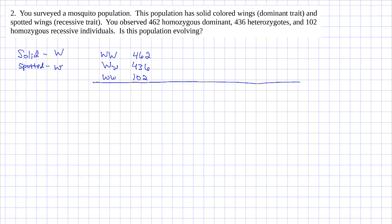That means that our total population size is 1000 mosquitoes. Our observed frequencies is 462 divided by 1000, which is 0.462. For our heterozygote it's 436 divided by 1000, which is 0.436. And for our homozygous recessive, we have 102 divided by 1000, or 0.102. These are the observed genotype frequencies as they exist in the population.